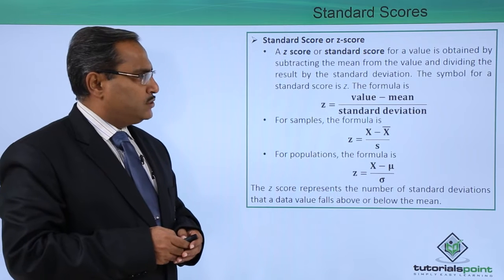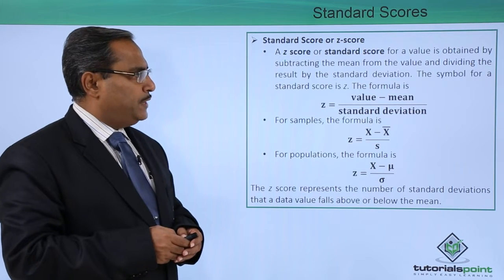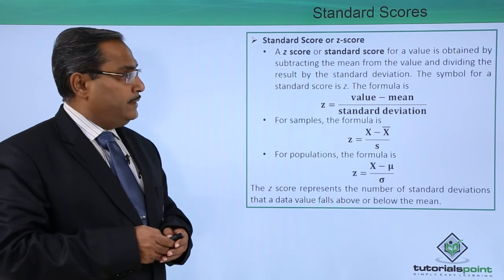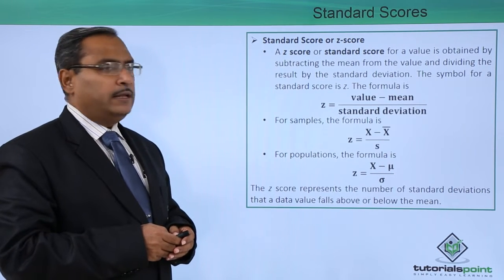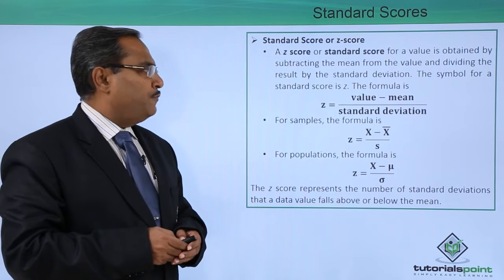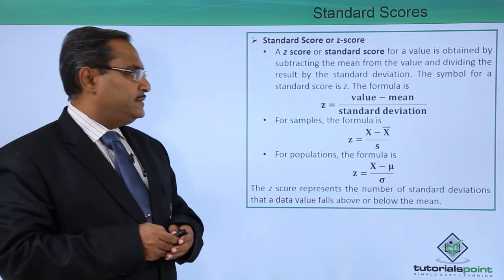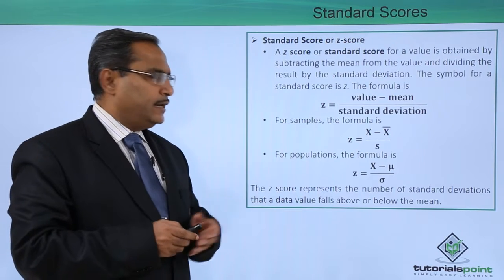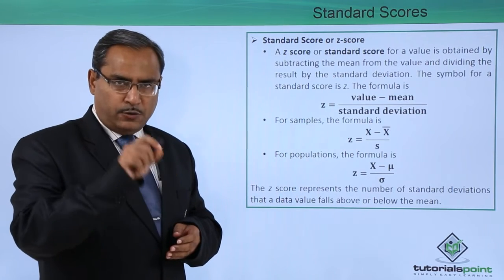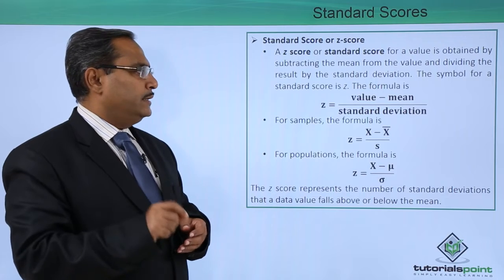A z-score or standard score for a value is obtained by subtracting the mean from the value and dividing the result by the standard deviation. The symbol for a standard score is z, and the formula can be visualized as z equals value minus mean divided by standard deviation.